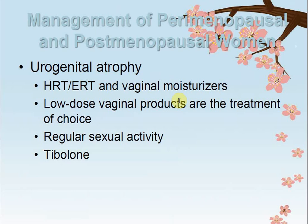Management continues with urogenital atrophy. Hormonal therapies and vaginal moisturizers are used. During hormonal changes in the reproductive age, when reproductive capacity reduces, vaginal lubrication and sexual libido decrease, causing vaginal dryness and itching. Hormonal therapy is given to enhance libido and maintain normal levels, along with vaginal moisturizers to reduce itching. Low-dose vaginal products are the treatment of choice.